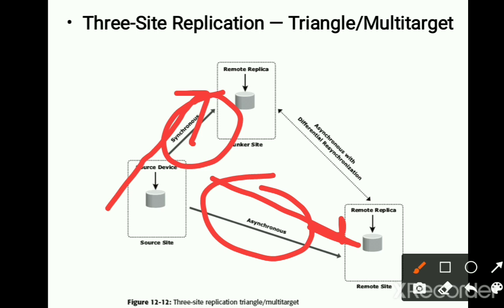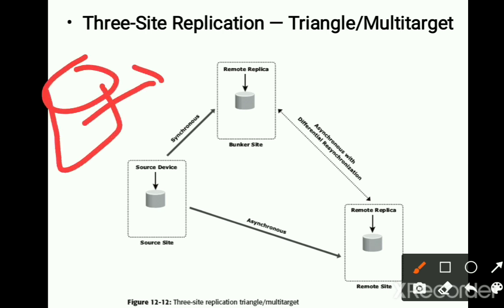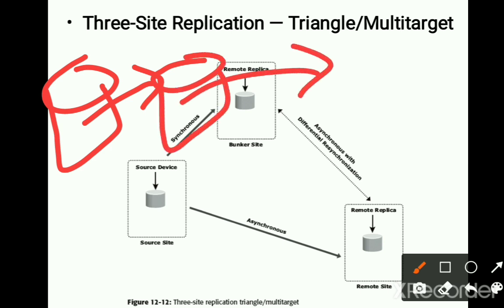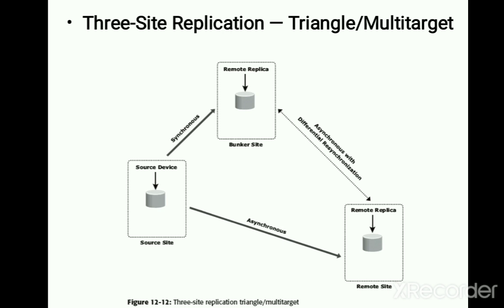The distance between the source and remote sites could be thousands of miles because asynchronous mode is used. This implementation does not depend on the bunker site for updating data on the remote site, because data is asynchronously copied directly from the source to the remote site. The key benefit of the triangle configuration is the ability to fail over to either of the two remote sites.